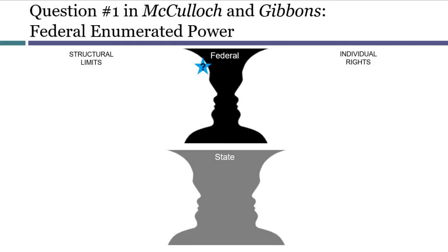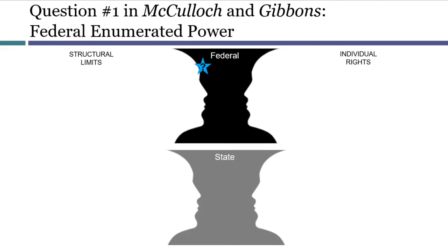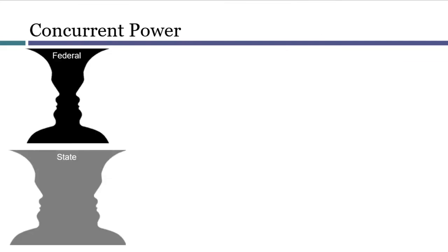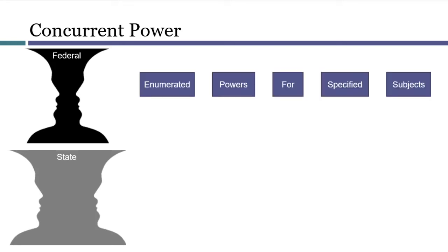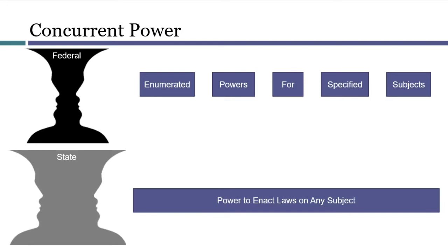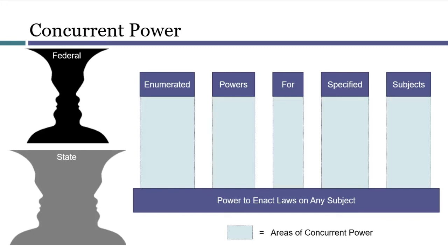But if Congress did have power to enact the federal law, we would then need to move on to the second question. The second question involves reconciling the concurrent use of powers that each government possessed. The federal government has enumerated powers to enact laws on specific subjects, while states have power to enact laws on any subject, meaning there may be some overlap — powers that both levels of government may exercise. You've experienced concurrent powers when paying both state and federal taxes on the same income or the same gallon of gasoline. The federal and state governments could use their concurrent powers at the same time, and that's frequently allowed.